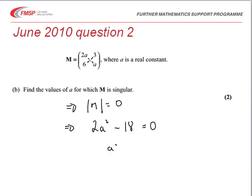Well, that gives us that a squared is equal to 9, and therefore a must be equal to plus or minus 3. So the two values, positive and negative 3.